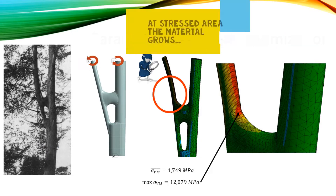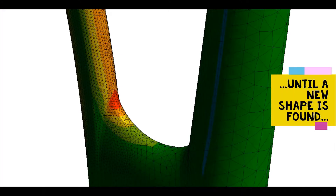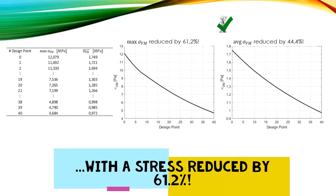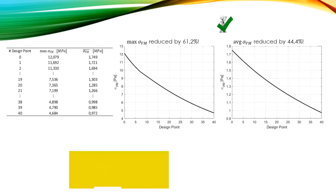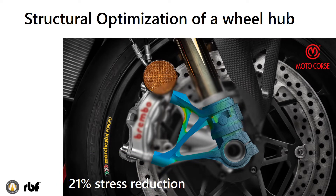Hotspot mitigation can be achieved by steering shape parameters, or by adopting our bio-inspired method, to get a better design — as in the case of this motorbike part.